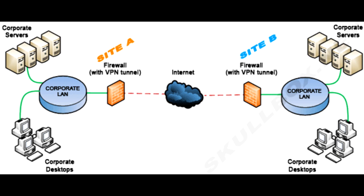When companies use site-to-site VPN to connect to the office of another company, it is called extranet-based VPN. Basically, site-to-site VPN creates a virtual bridge between the networks of geographically distant offices, connecting them through the internet and maintaining secure and private communication between the networks.